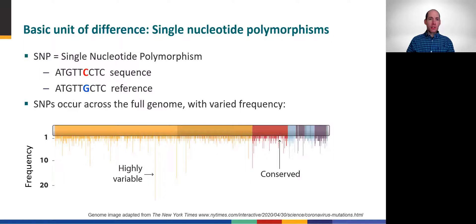The most common approach to comparing molecular sequence data is by detecting single nucleotide polymorphisms, or SNPs for short. This simple example illustrates a single nucleotide difference, C versus G, between two sequences.